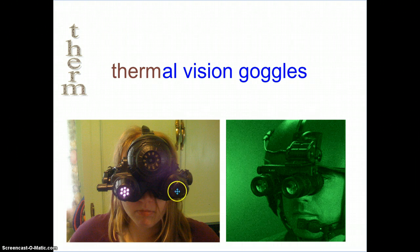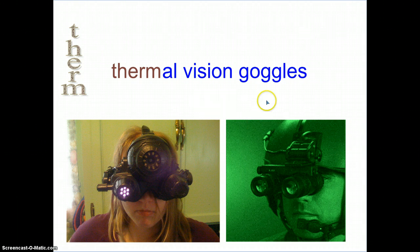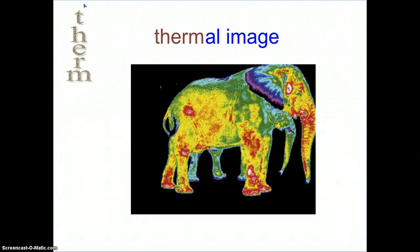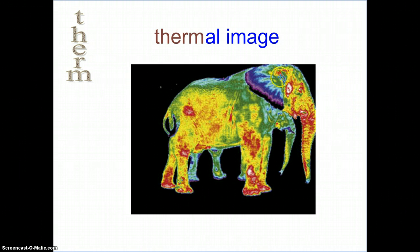Thermal vision goggles are kind of cool because they allow you to see the heat in objects. They sort of make you look like an alien, but they're pretty cool looking. And here is one more thermal image — a picture of an elephant where you can see the different levels of heat inside of the elephant.